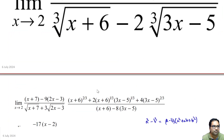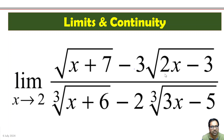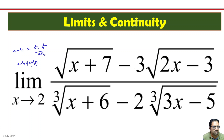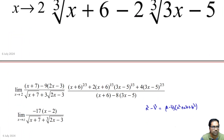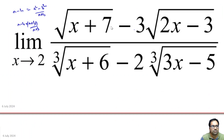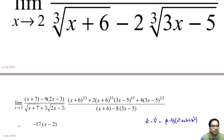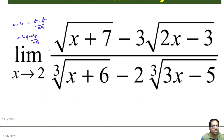For the square root part: root of (x+7) minus 3·root(2x-3) is in the form a minus b. We use the identity a minus b equals (a²-b²)/(a+b), i.e., we multiply by (a+b)/(a+b). So the numerator becomes a²-b², which is (x+7) minus 9·(2x-3), divided by root(x+7) plus 3·root(2x-3). We have multiplied with its conjugate.